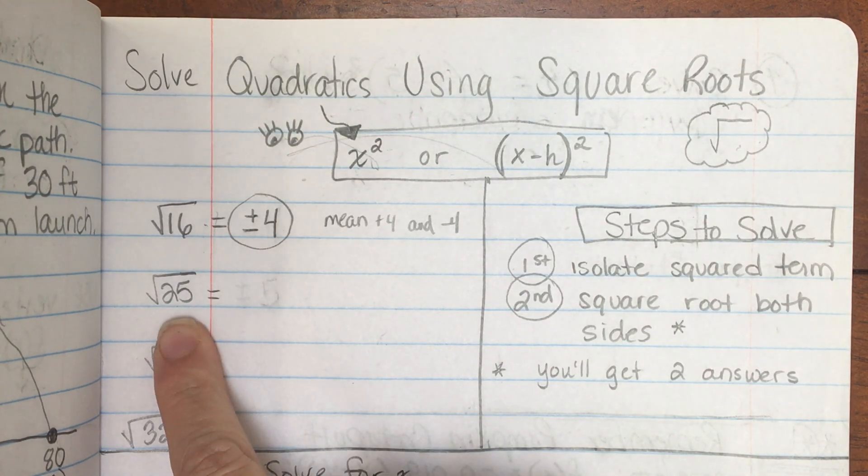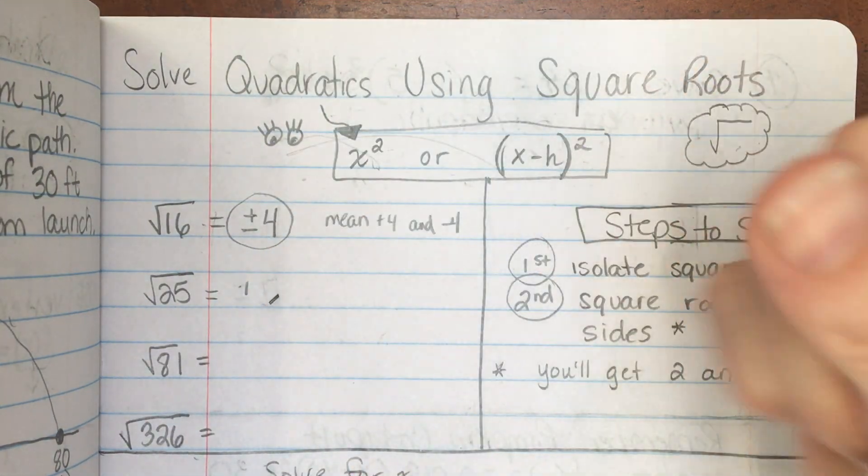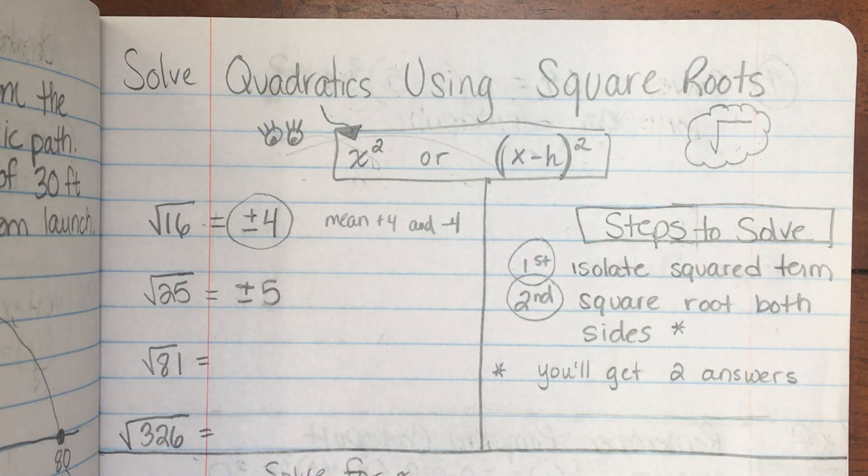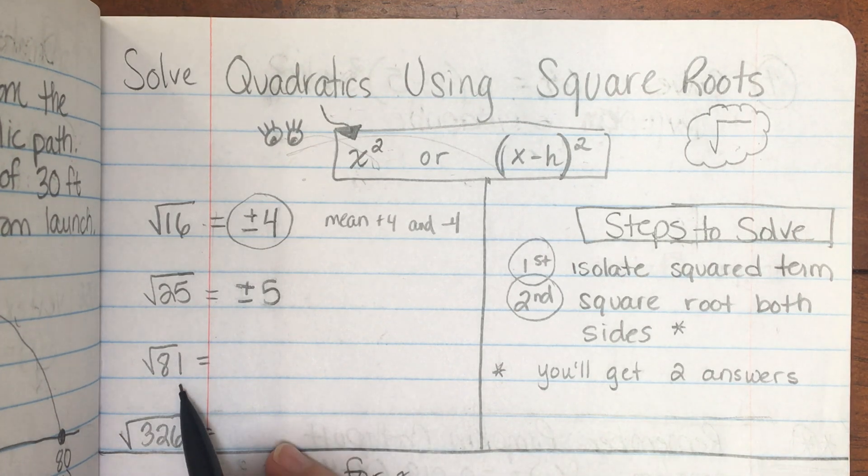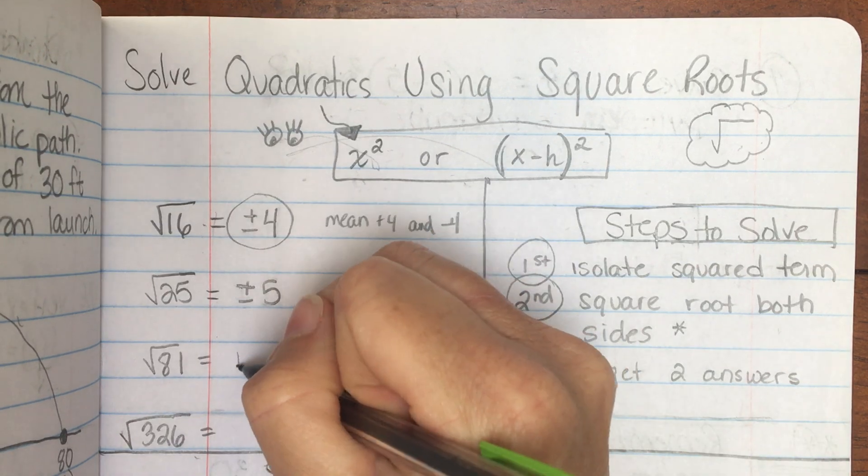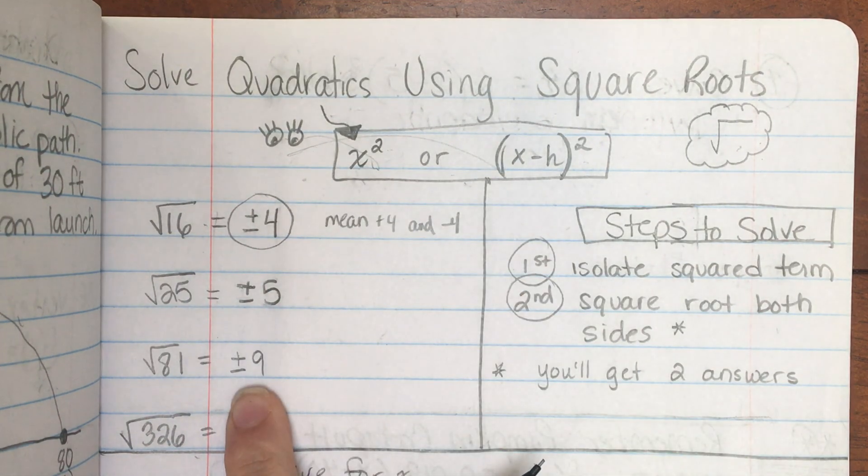What's the square root of 25? Positive and negative 5. If you multiply those by itself, you get 25. The square root of 81 is plus or minus 9, or positive or negative 9.